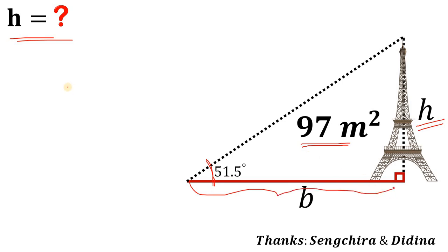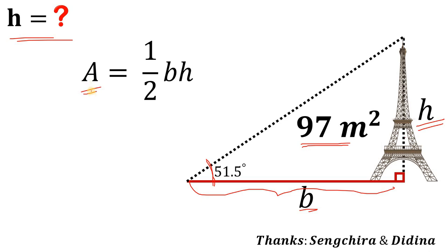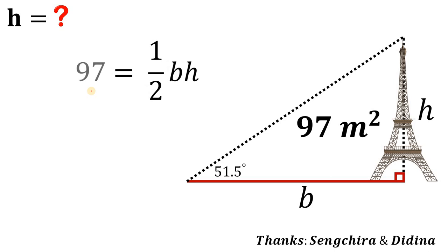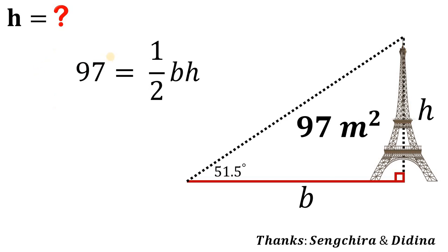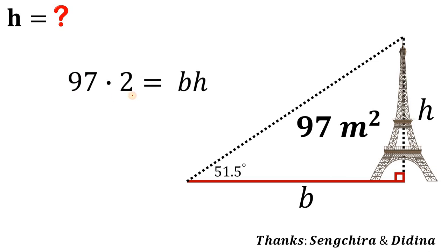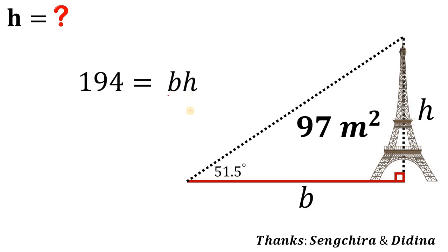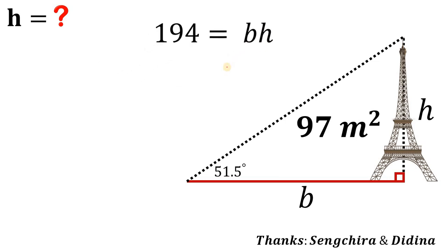Using the concept of the area of a triangle, we know the area must be equal to one-half times base times height. We have the base, we have the height, and we know the area is 97 square meters, so we replace A with 97. We then multiply both sides by 2 to eliminate the denominator, giving us 97 times 2 equals base times height, or B times H. So 194 must equal B times H. Let's set aside this equation.